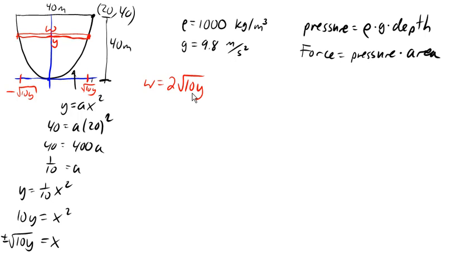So now we know the width of our slice. From the width of our slice, we can find the area of our slice. The area of our slice is going to be the width times our height. And our height here is some little change of y. So we're going to get 2√(10y) times dy as the height. And that gives me the area of my slice.